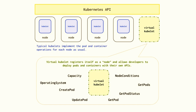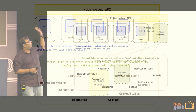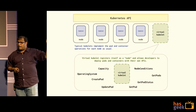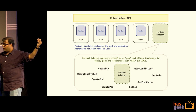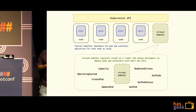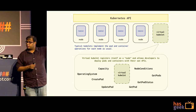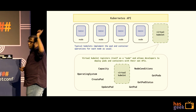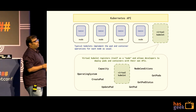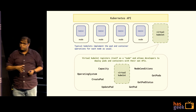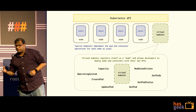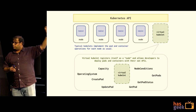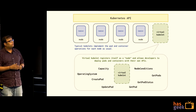Imagine you have certain nodes and there is traffic coming to your system, with pods being created into these kubelets, and you need to scale at this point. This scaling will happen with the virtual kubelet. You are also using horizontal pod scalers and a container backend. You're not creating a new node, but actually connecting to a container instance service where you can deploy these pods and containers onto the virtual kubelet.